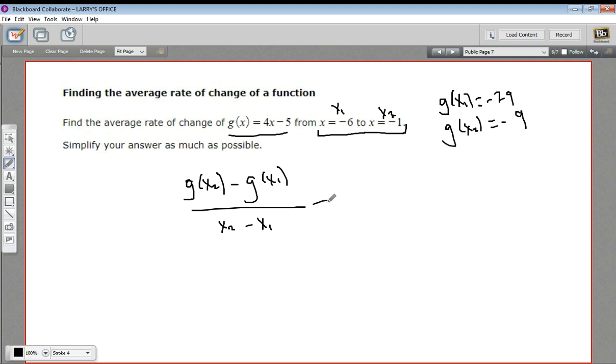Now we can go ahead and plug in the numbers in our formula here. So this is negative 9 minus a negative 29, and that goes over negative 1 minus a negative 6.